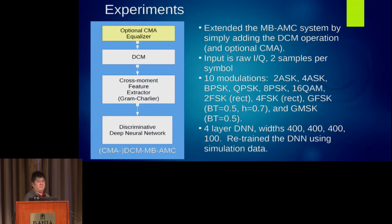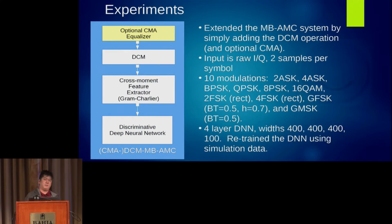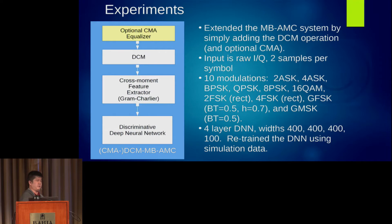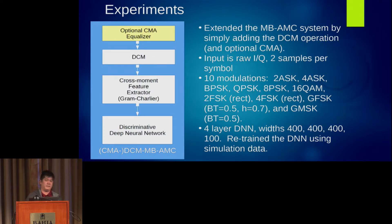We did some experiments basically the same as last year: generated a ton of signals sampled at two samples per symbol, with an optional CMA equalizer up front. We did that delay-conjugate-multiply, then cranked it through the same system, trained the neural network, and extracted all those moments. The deep neural network got a little bit bigger this year — it just needed a little bit more capacity. The experiments ran against ten different modulations: 2ASK, 4ASK, BPSK, QPSK, 8PSK, 16QAM, rectangular pulse-shaped 2FSK and 4FSK, GFSK, and GMSK.